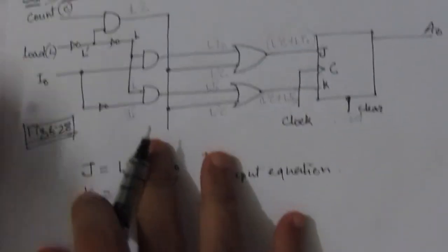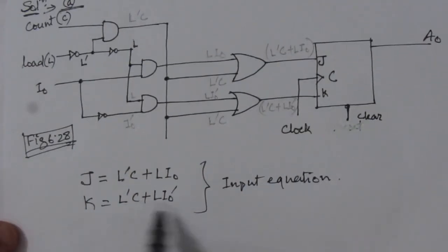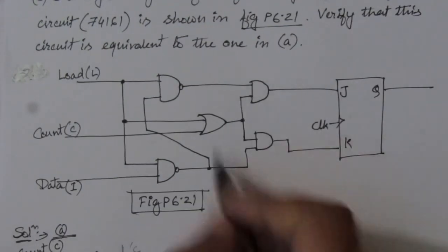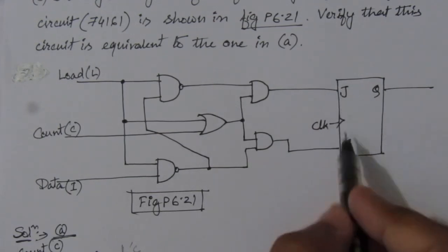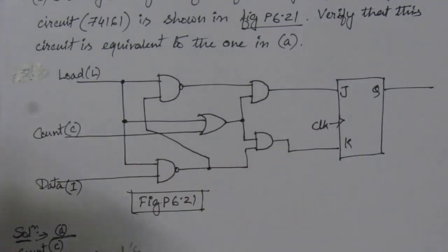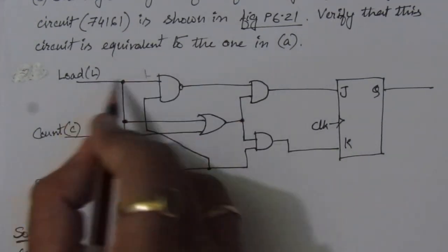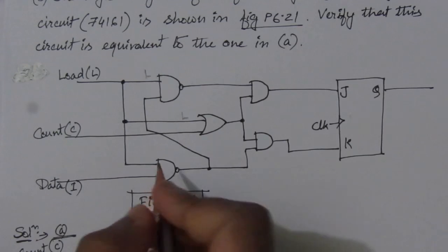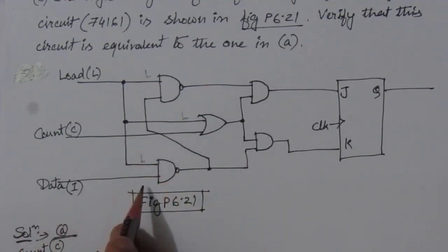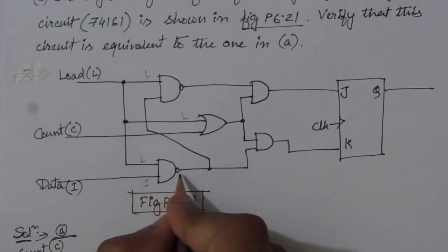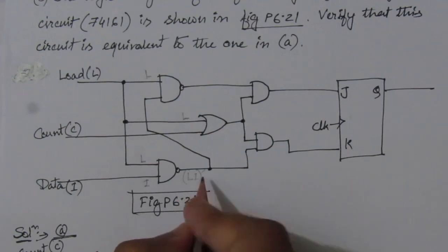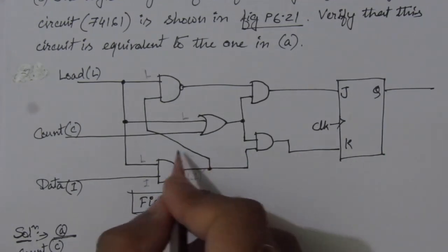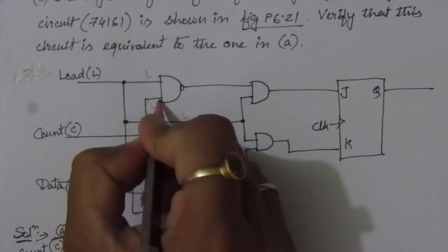Here I0 is used since this is the first stage. Now in the second part we consider the 74161 circuit to find J and K so we can compare with part A. L is connected to an OR gate input and also to a NAND gate input. With I0 as the other NAND input, the NAND gate output is (L·I0)', because NAND performs AND then complements. So (LI0)' is one input to the next gate.